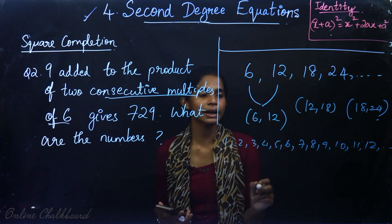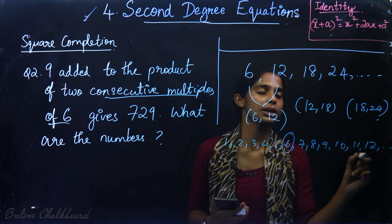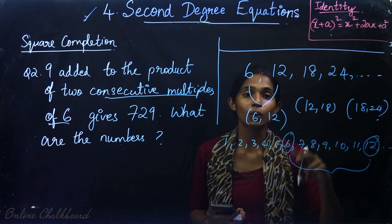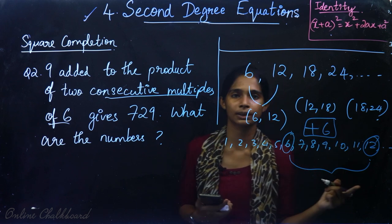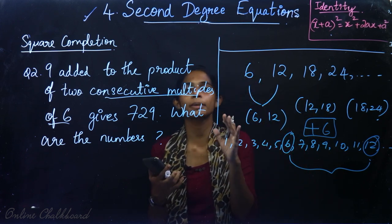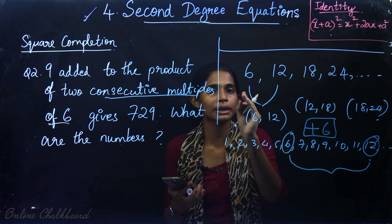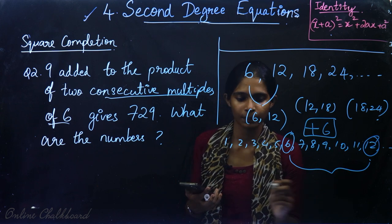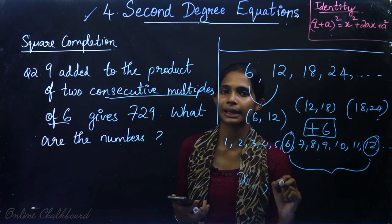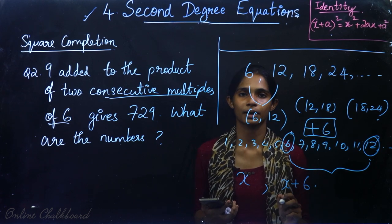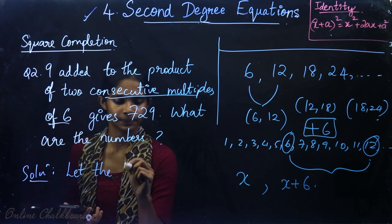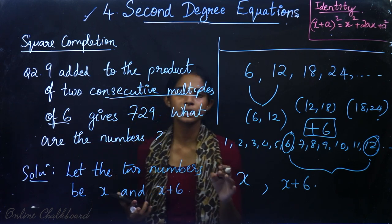We have a multiple of 6, and the next consecutive multiple of 6 is obtained by adding 6. For example, 12 and 18 differ by 6. So here we can say: let the two numbers be x and x plus 6.